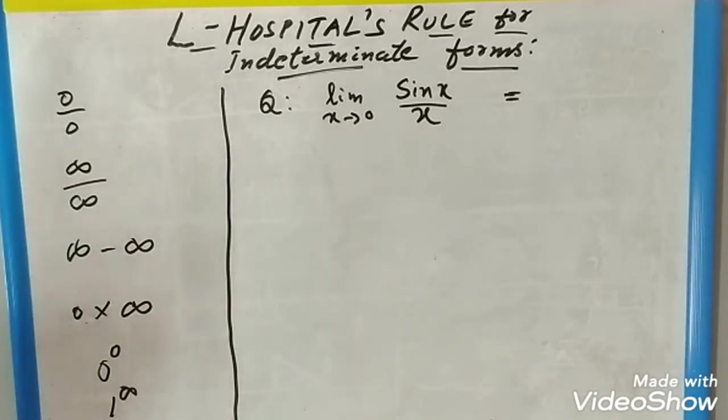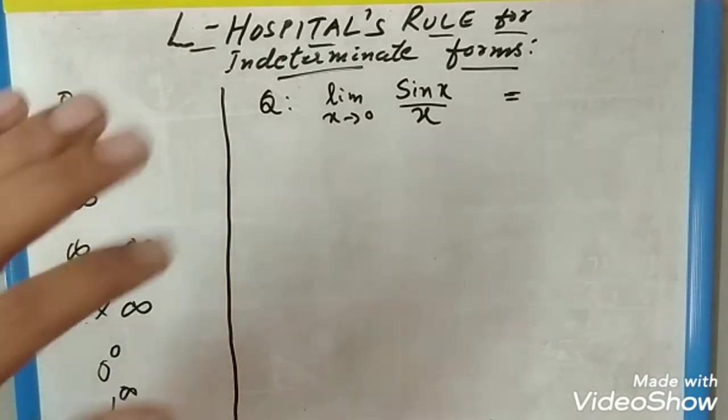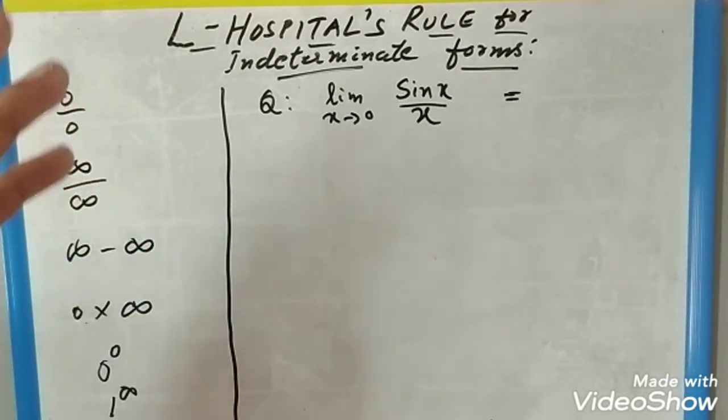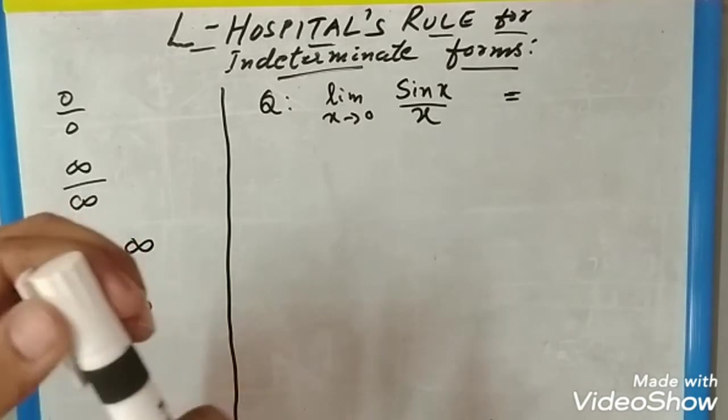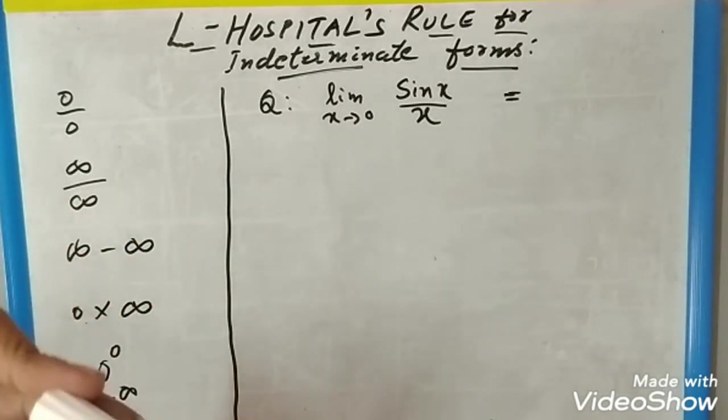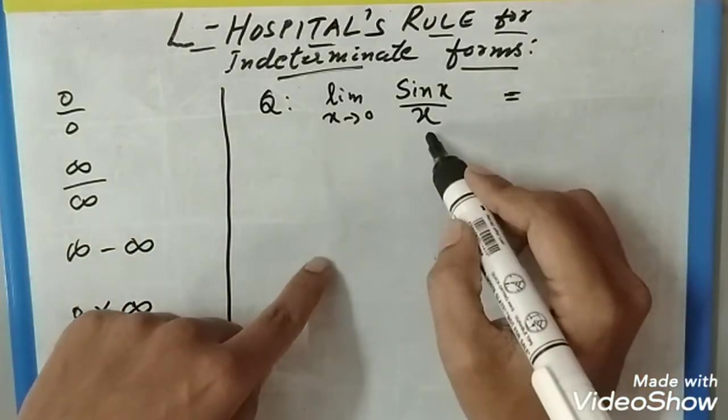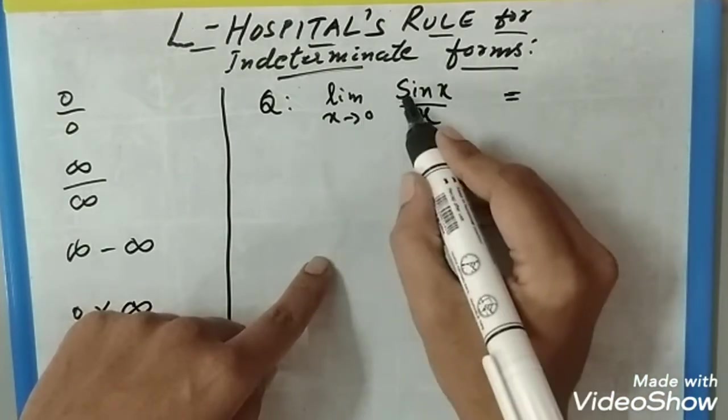To solve this, we have L'Hospital's rule. Let us analyze this using one example. We have the example: limit x tends to 0, sin(x)/x. If you substitute x in the place of this...